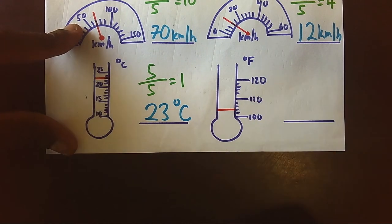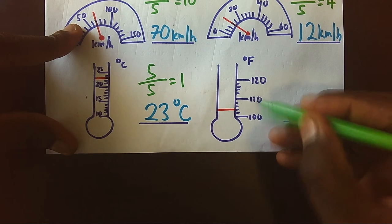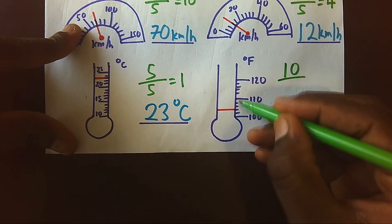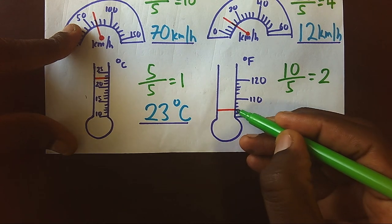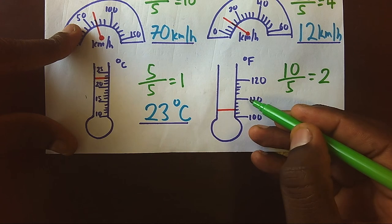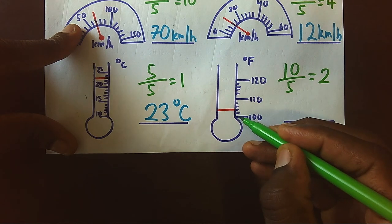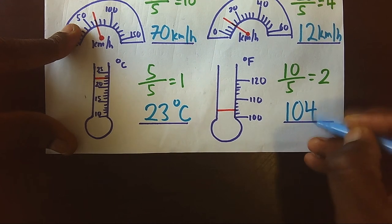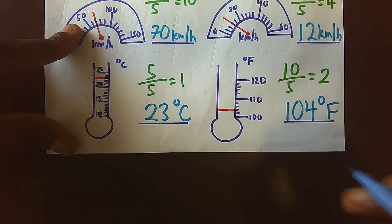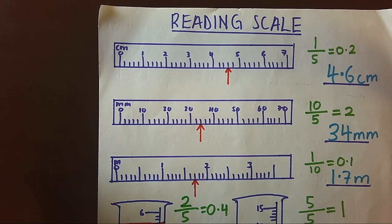And finally, if I have Fahrenheit, we can see the gap is 10. So 10 divided by five spaces which will give me two, meaning 102, 104, 106, 108, 110. Hence my measure is at 102 and 104. This will be 104 degrees Fahrenheit.